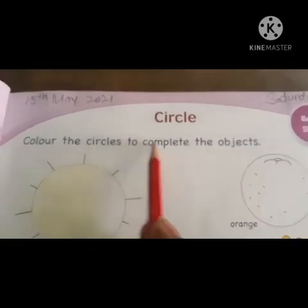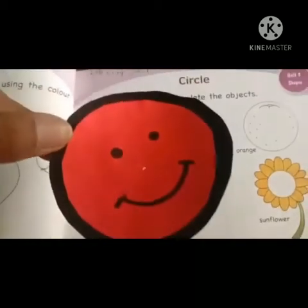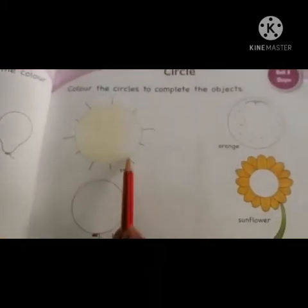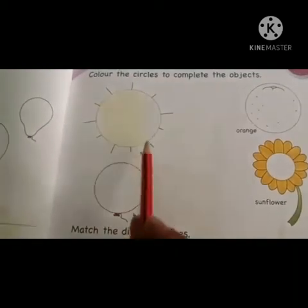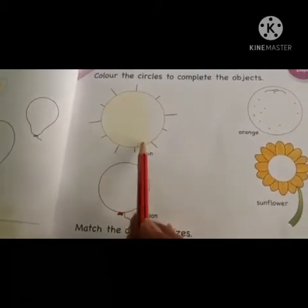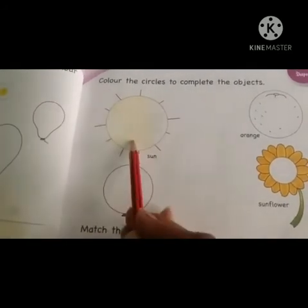Circle. Color the circles to complete the object. Which shape is this? Circle. A circle is made up of only curved lines. A circle does not have any sides or any corners.